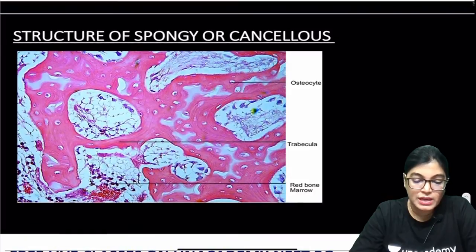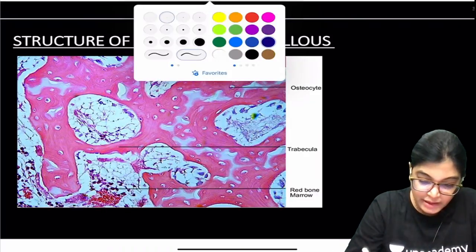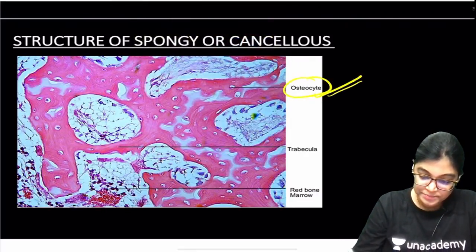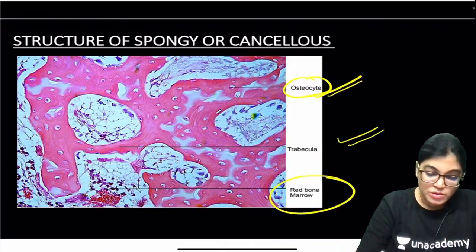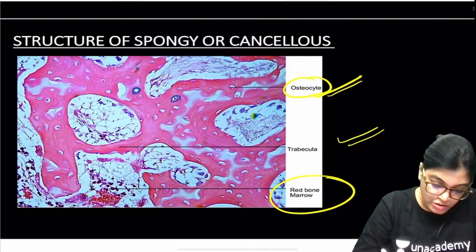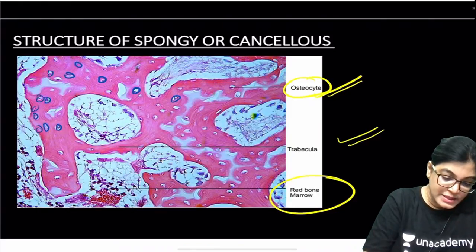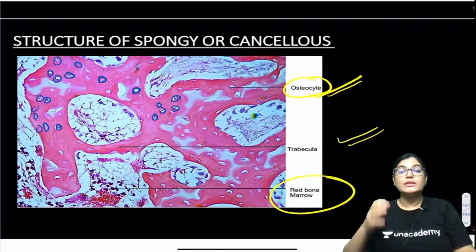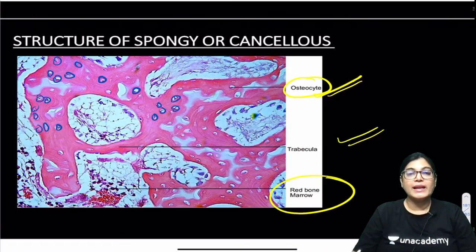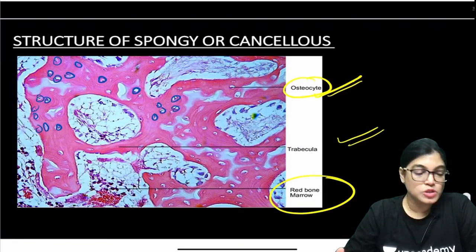For spongy or cancellous bone: the exact laminar arrangement of bone is not visible. You can see osteocytes and trabeculae, and a part of red bone marrow will also be seen. The osteocytes are present but the laminar arrangement is not formed. These represent the non-mature form, lying very close to the inner bone marrow.